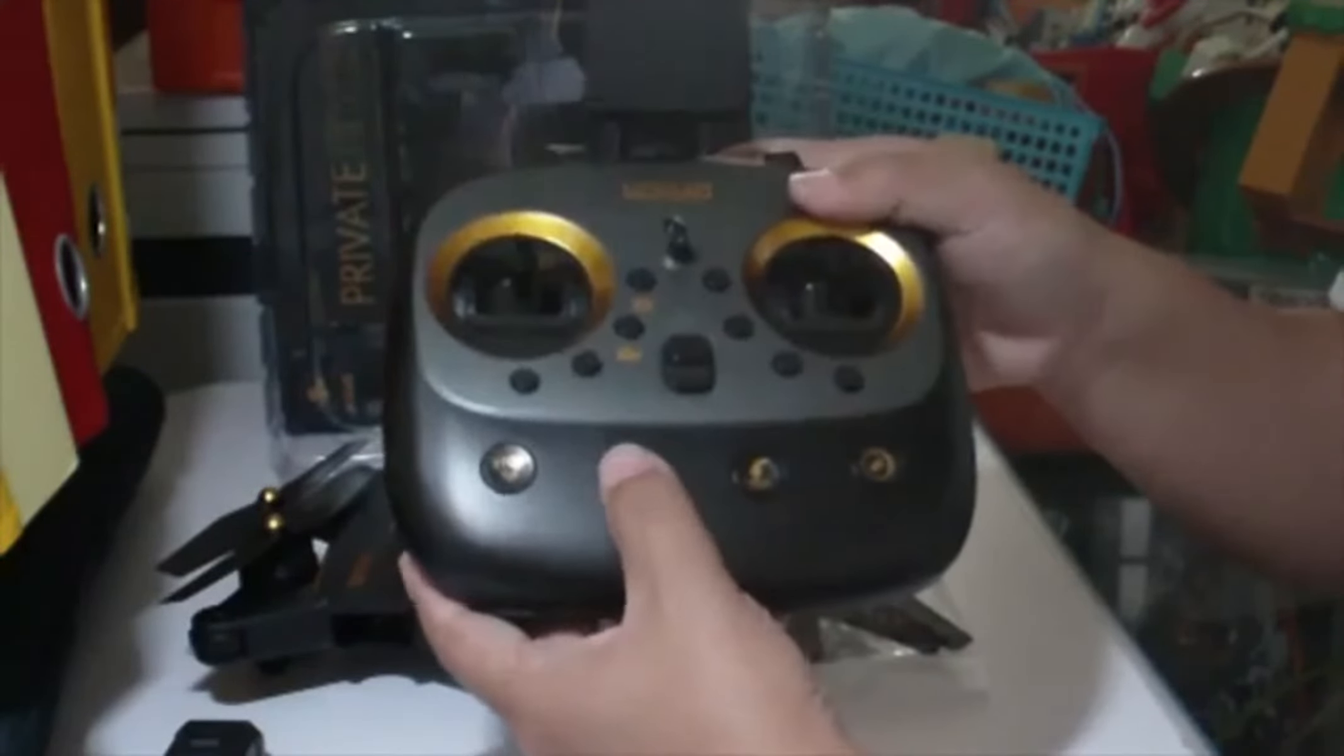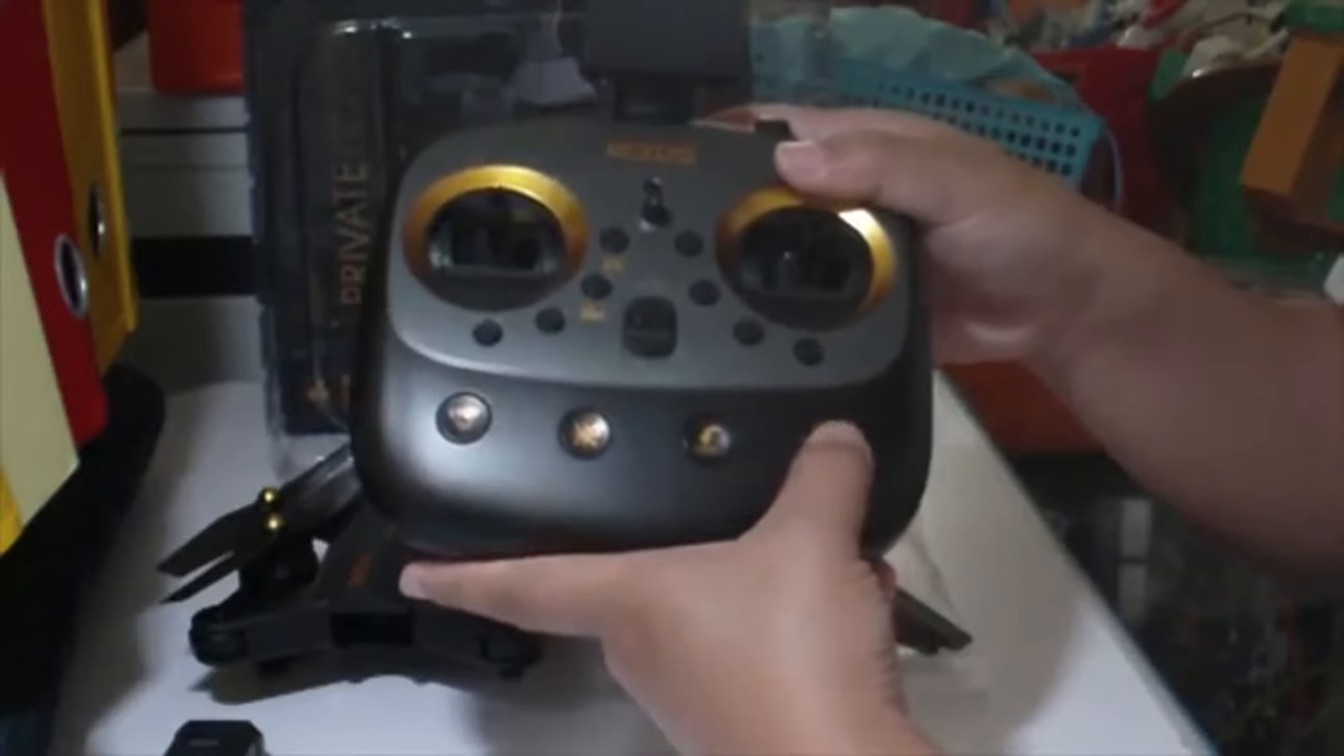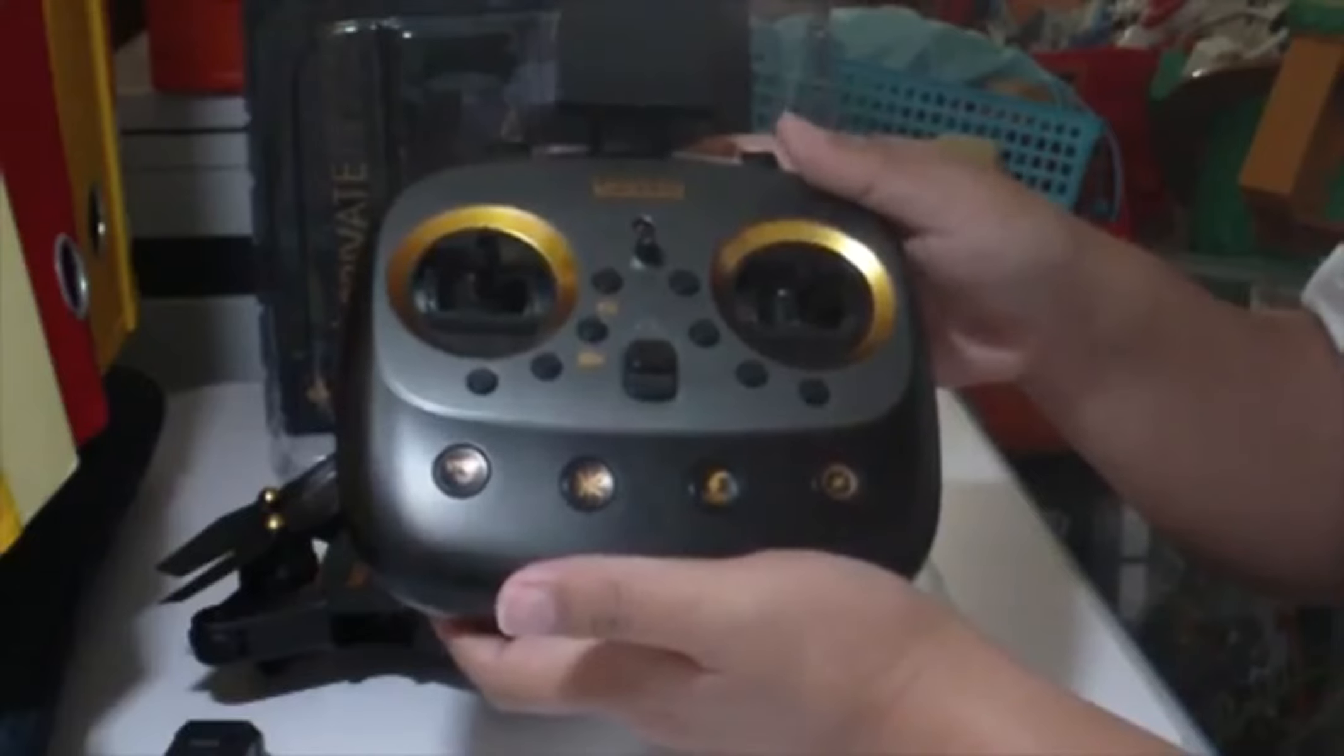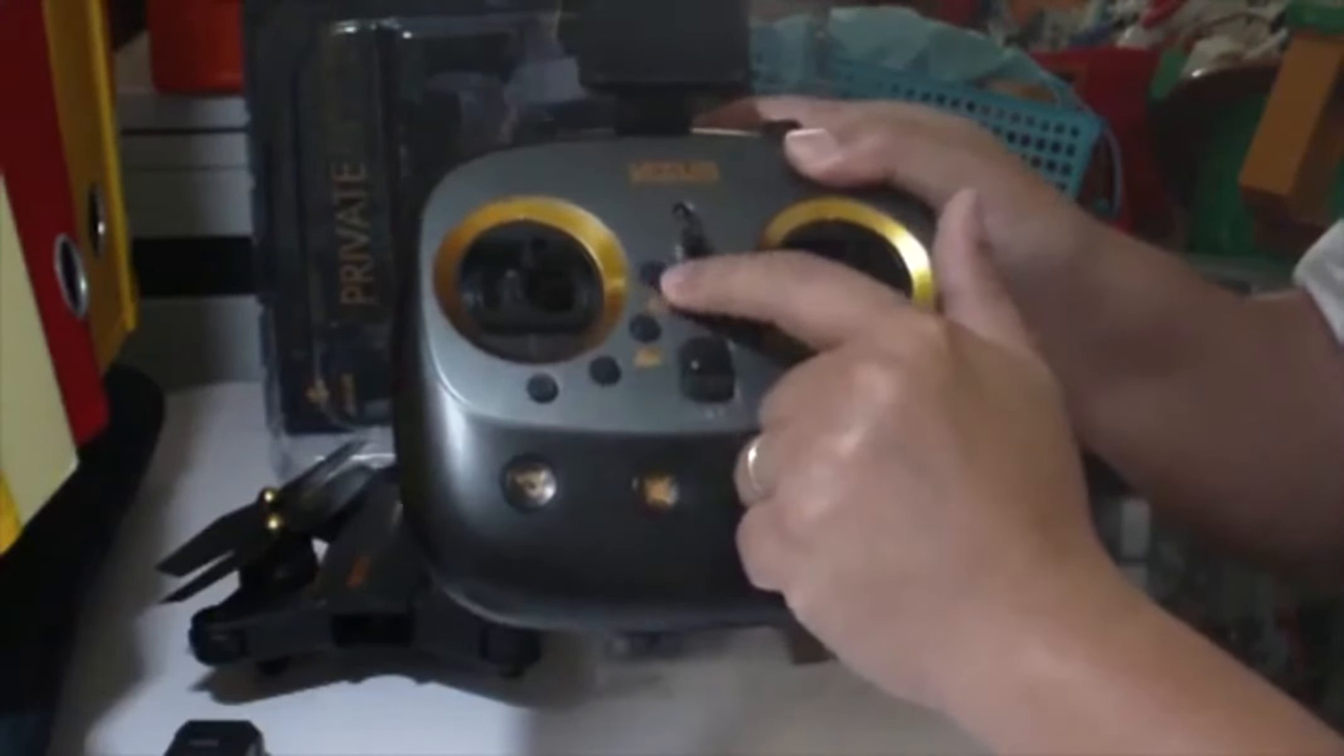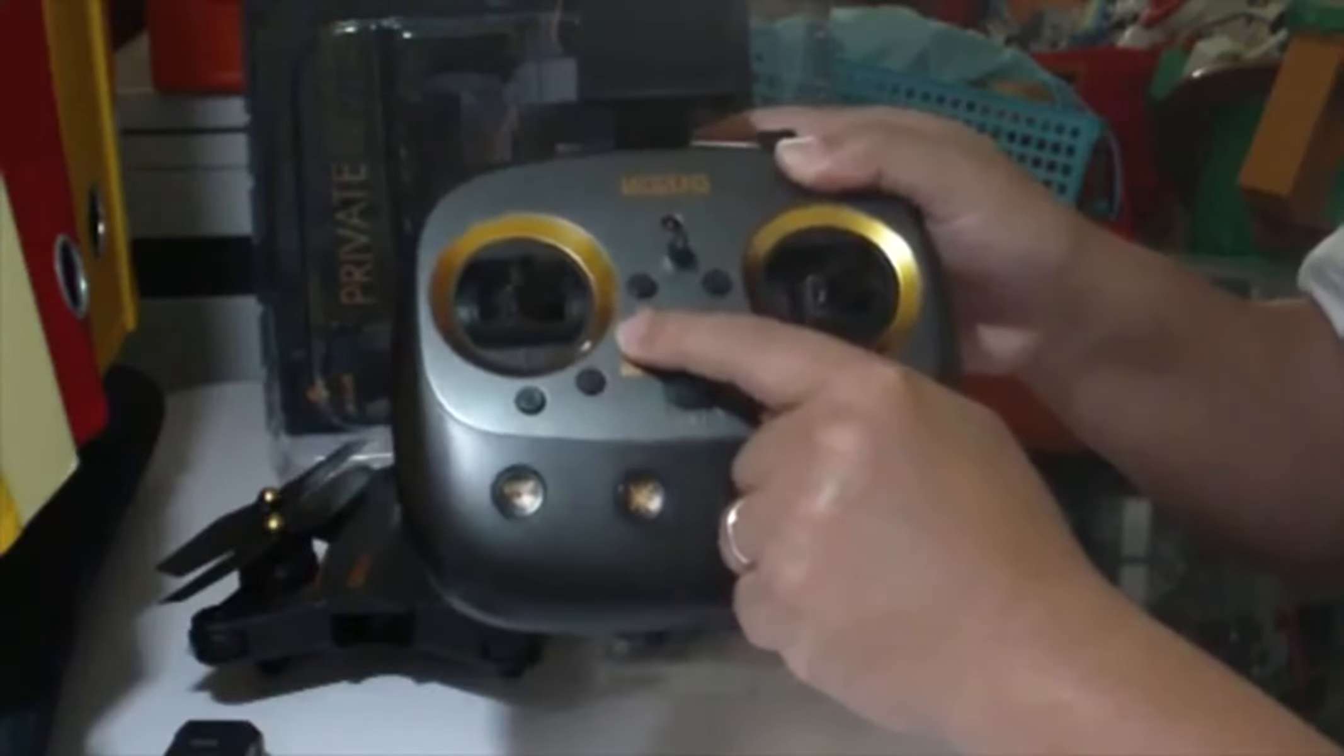You have the headless mode, the one-key return to home, and this is the compass calibration button to activate calibration. One button for taking pictures on your drone, one button to start taking videos.